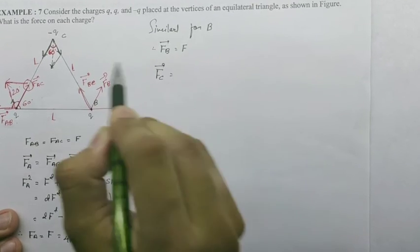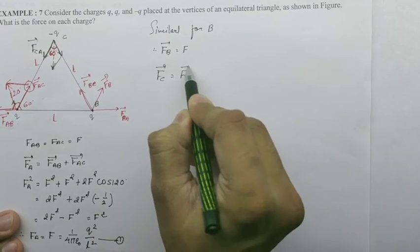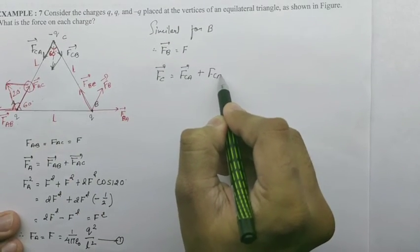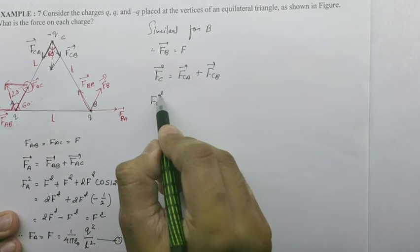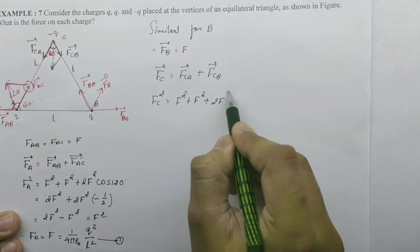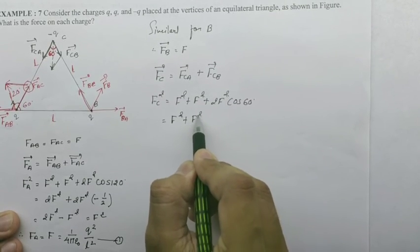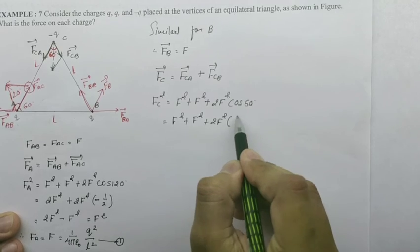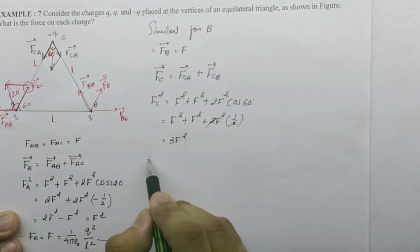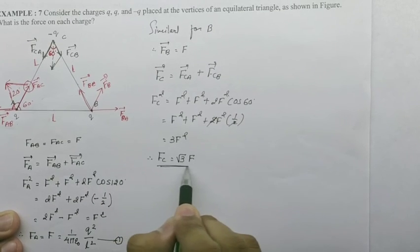So similarly for FC, it is the sum of FCA plus FCB. Squaring: FC² equals F² plus F² plus 2F² cos 60°. F² plus F² plus 2F² times half, two cancels, giving 3F². FC equals root 3 F.